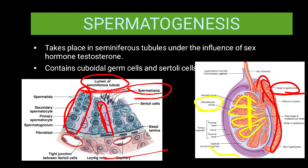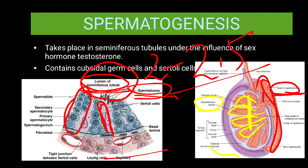Sertoli cells also secrete some fluid, and with the help of this fluid the spermatozoa move into the epididymis. In the epididymis they are stored temporarily. Here their maturation occurs — their fertilization capacity increases, and also their motility capacity. They become motile. This whole process of spermatozoa formation takes a very long time — around 2 to 2.5 months in humans.